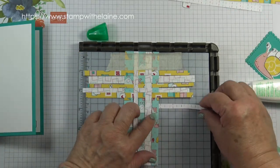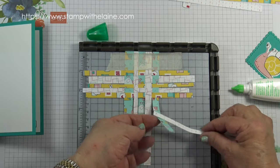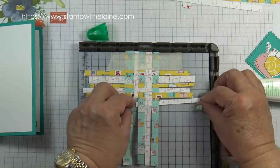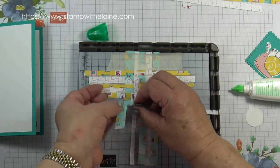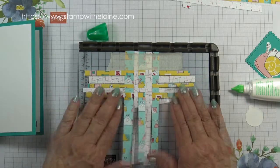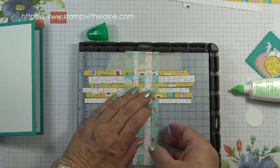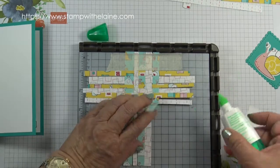And one on the end to secure that one. So that one will be under, over, under, over, under. So shuffle it up to there and then apply my adhesive again.